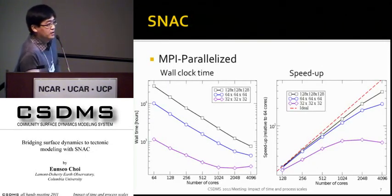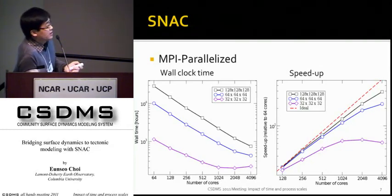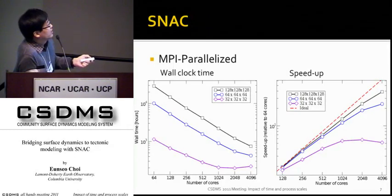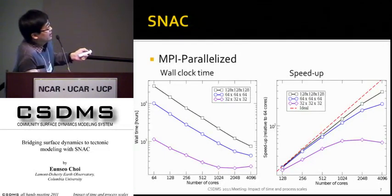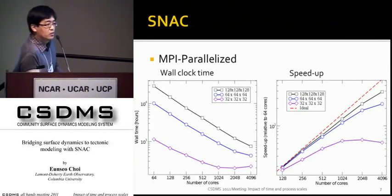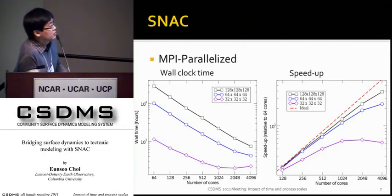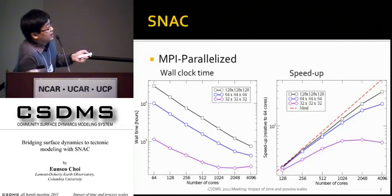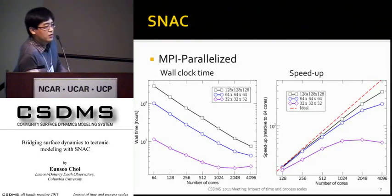SNAC is an MPI parallel code. Here I'm showing some data from performance tests. The plot on the left shows wall clock time for three different problem sizes as a function of number of cores, and on the right is the corresponding speedup data. For the smallest problem size, the performance degrades pretty quickly — speedup actually decreases when the number of cores goes beyond 1,000, because the overhead of MPI operations quickly dominates the overall numerical cost when the local domain size is too small. But if we increase the problem size, performance stays very close to the ideal value up to a core count of 4,096, with efficiency staying above 70%.